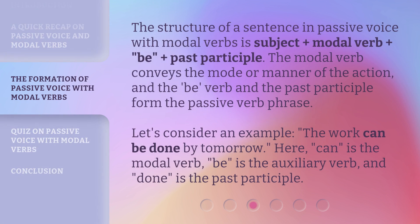The structure of a sentence in passive voice with modal verbs is: subject + modal verb + be + past participle. The modal verb conveys the mode or manner of the action, and the be verb and the past participle form the passive verb phrase. Let's consider an example: 'The work can be done by tomorrow.' Here, 'can' is the modal verb, 'be' is the auxiliary verb, and 'done' is the past participle.